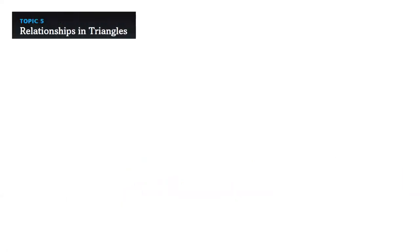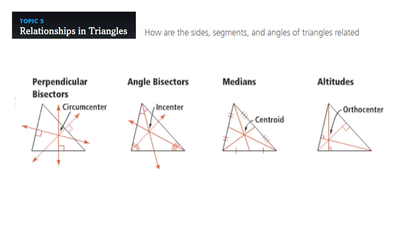Topic five is about relationships in a triangle. How are the sides, segments, and angles of a triangle related? What do we call each one of them?